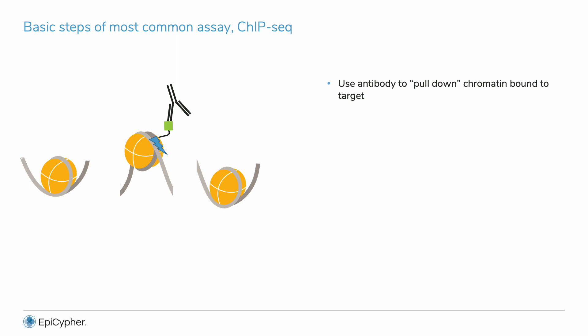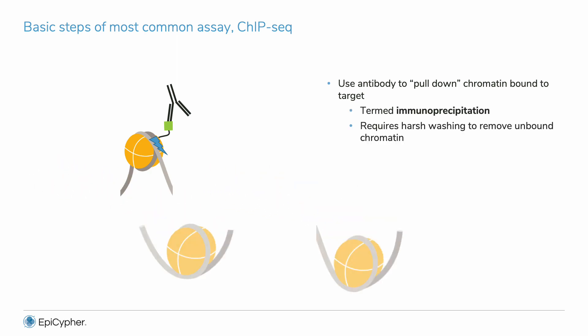For histone PTMs, it is essential to use a rigorously validated antibody, since many antibodies to histone PTMs show nonspecific binding activity. You then use the antibody to pull down the nucleosomes associated with your target. This is the immunoprecipitation, or IP step, and includes a series of stringent high-salt washes to fully strip unbound nucleosomes and reduce nonspecific background. Unfortunately, these washes can also result in loss of your target-associated nucleosomes, particularly for weak chromatin interactions or if the antibody has low binding affinity.